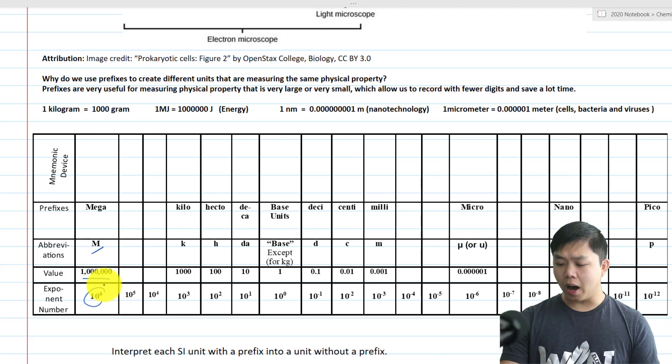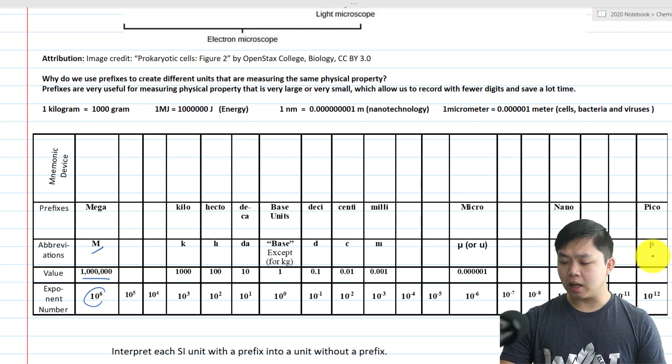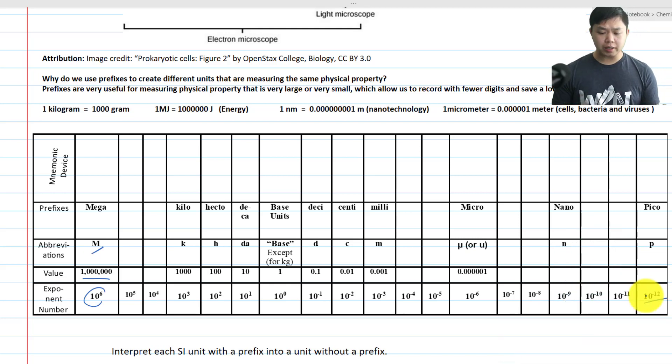On the other end where we have the prefix PICO represents 10 to the negative 12th, and that is a very, very small number. Now we also see some very common prefixes like MILLI, that is 10 to the negative third, or the thousandth. Or something like KILO, we know that very well, that represents 1,000.